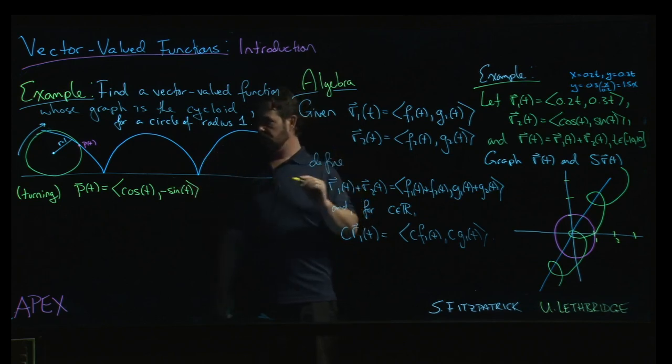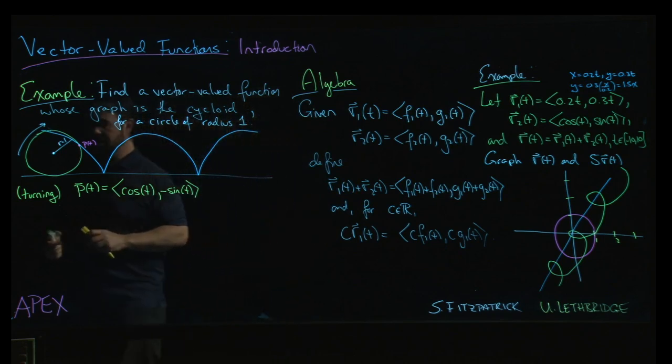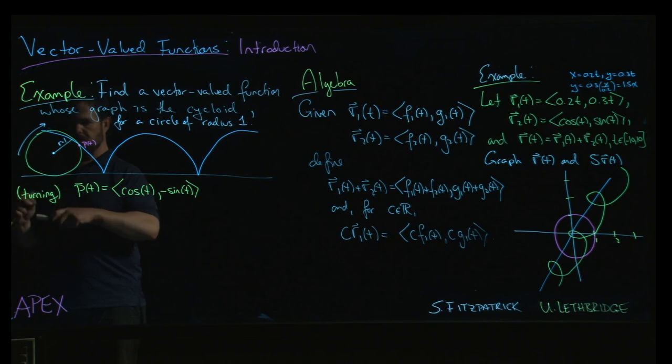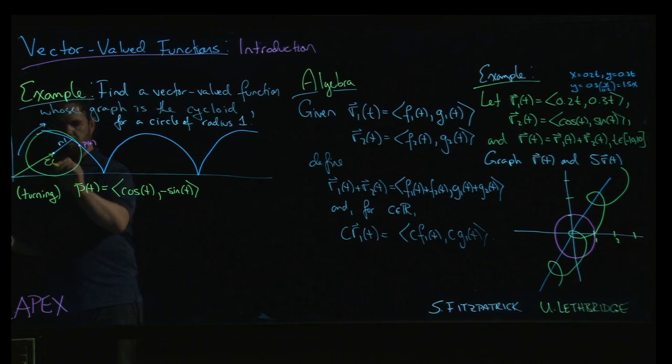But the circle is also going to move, right? And so what we also are going to have, imagine the origin is over here somewhere, right? You're going to have the vector-valued function, let's call it C(t), which describes the center of the circle, okay?